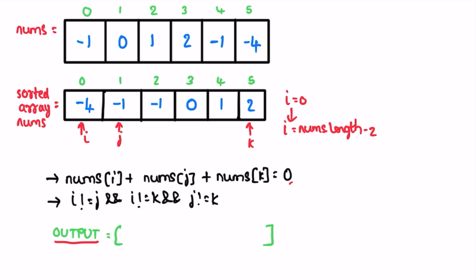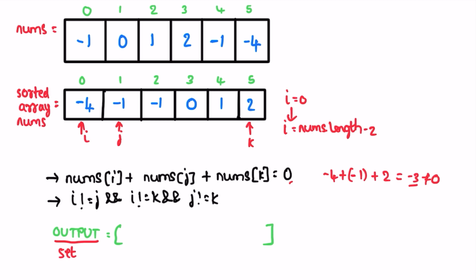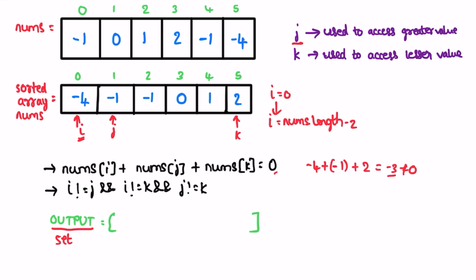I declare an output list of lists implemented as a HashSet to avoid duplicate pairs, which we convert to a list before returning. We check if the sum of elements at i, j, and k equals zero. The current sum is -3, which is less than zero. Since the array is sorted, j points at a lesser value and k points at a greater value. If sum is less than zero, we increment j to access a greater element.